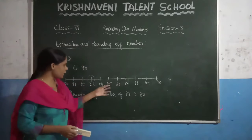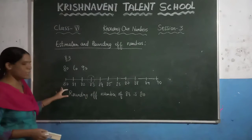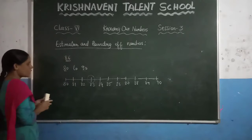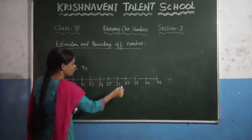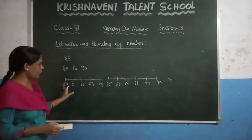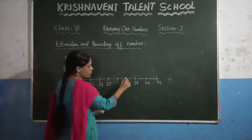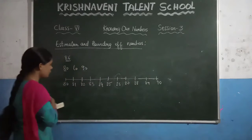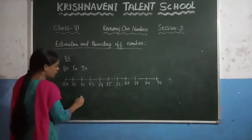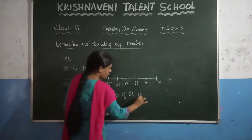If you see the number 90, it is far compared to 80. So you have to take the nearest number of 83 as 80. Now if you have given the number 86 — where is 86? You have to check whether 86 is nearest to either 80 or 90. You can observe that 86 is very near to 90 because in between only 3 numbers are there, whereas from 80 there are 5 numbers in between. So we can say that the nearest number of 86 is 90.